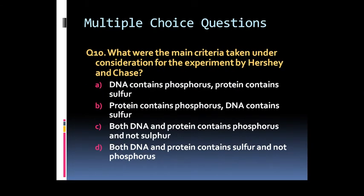Option C: Avery, McLeod and McCarty. Or Option D: Mieselson and Stahel. Question 10: What were the main criteria taken under consideration for the experiment by Hershey and Chase? Option A: DNA contains phosphorus, protein contains sulfur. Option B: Protein contains phosphorus, DNA contains sulfur.